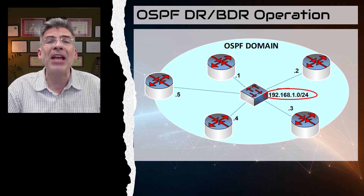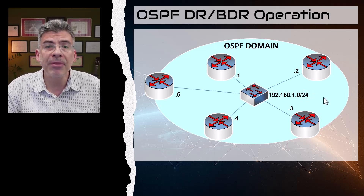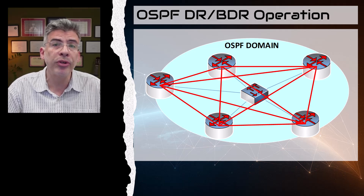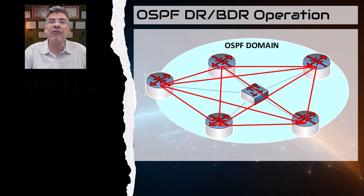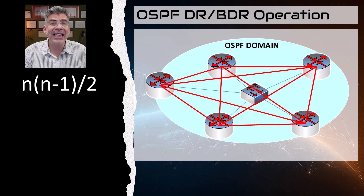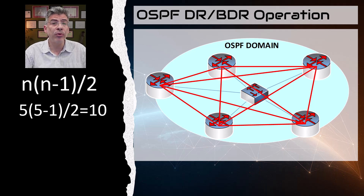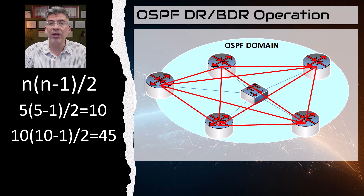Such a full mesh of OSPF adjacencies would look something like this. The number of OSPF adjacencies needed for a particular number of routers connected to the same network segment is governed by this formula here, where n is the number of routers in the broadcast domain. If we plug in 5 for n, which is the number of routers we have in this network here, we get a value of 10 adjacencies. So for 5 routers, we need 10 adjacencies to be formed. But what happens if we go to 10 routers? Plugging in the numbers, we get 45 adjacencies. As the number of routers increases, the number of adjacencies seems to increase exponentially.